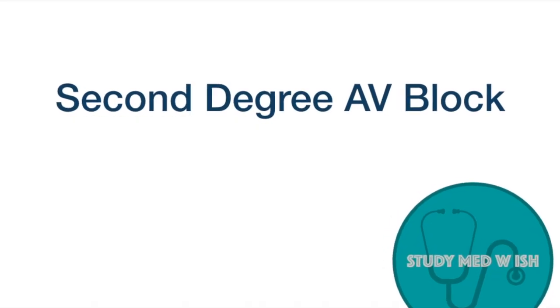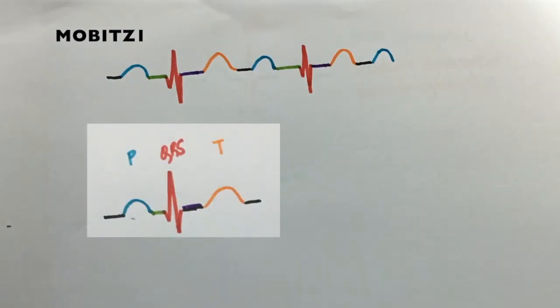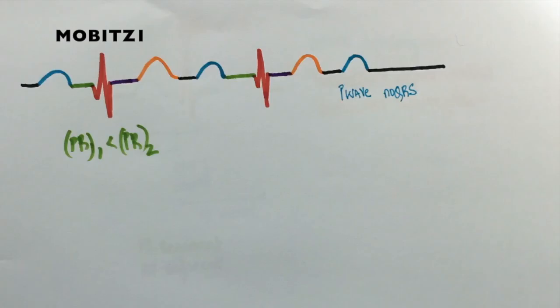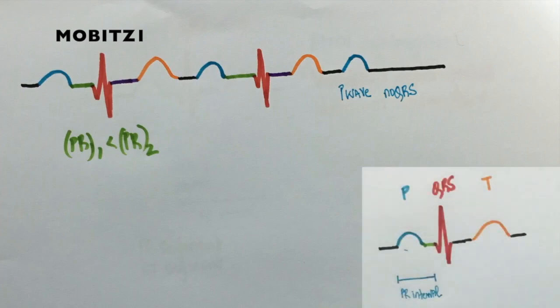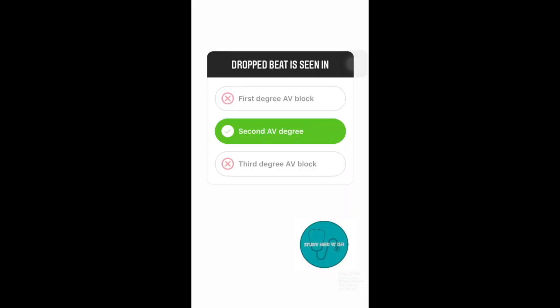Second-degree AV block is of two types, Mobitz-1 and Mobitz-2. In Mobitz-1, the P wave QRS complex and T waves are normal. But the PR interval progressively increases until there's a P wave which isn't followed by a QRS complex. This is known as a drop beat. Drop beat is a characteristic feature of second-degree AV block.